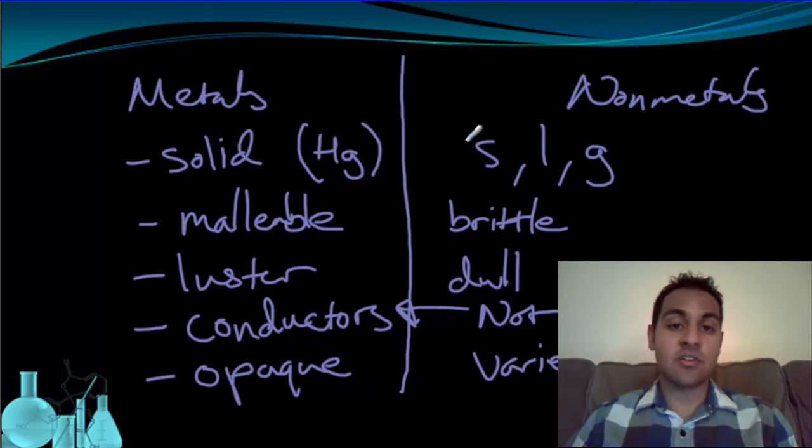And in fact, there are some elements that really don't fall nicely into one of these two categories. And we have a whole separate third category for elements that really don't fall into one of these two very well. And we call them metalloids or semi-metals.